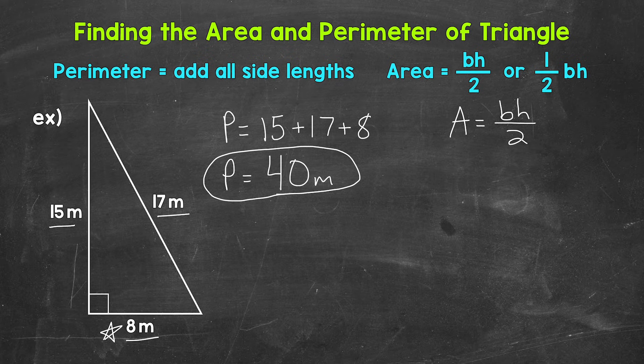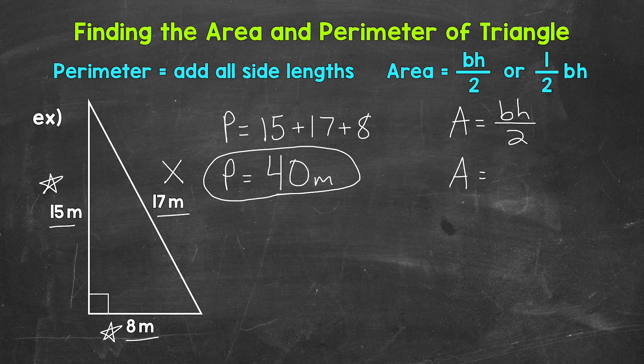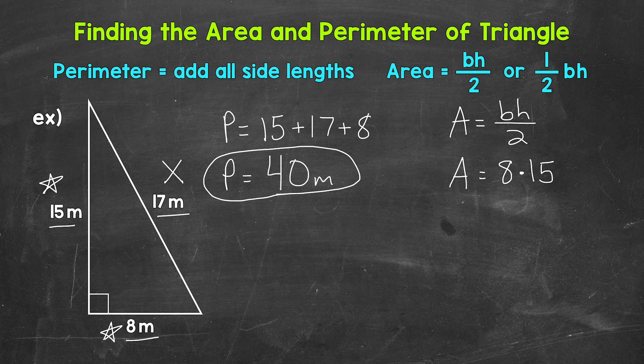We're going to use 8 meters for the base, and then 15 meters for the height. But we do not need this 17 meters in order to calculate the area. So let's plug in 8 meters for the base times 15 meters for the height divided by 2.